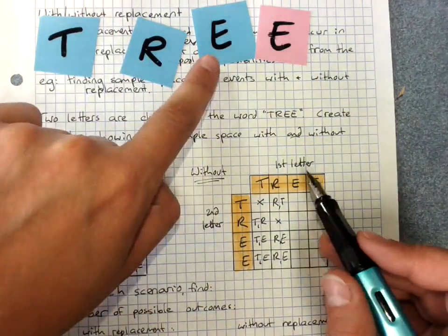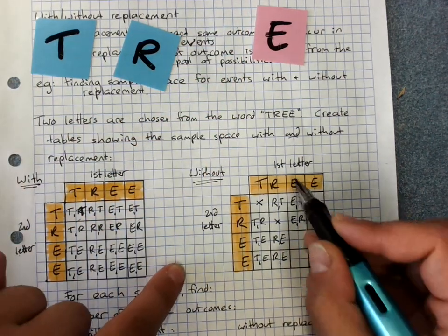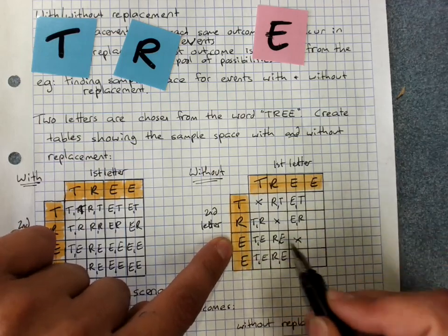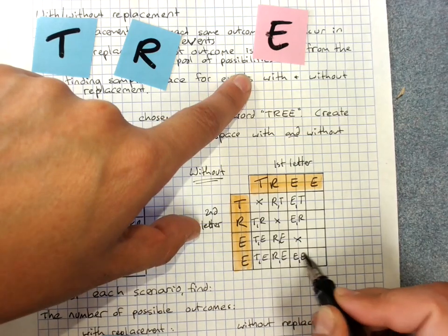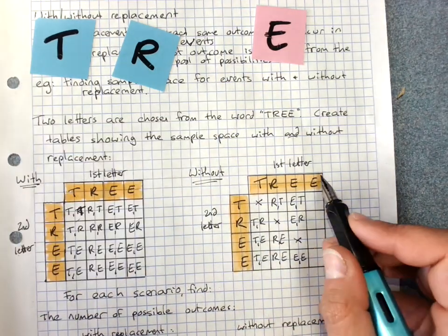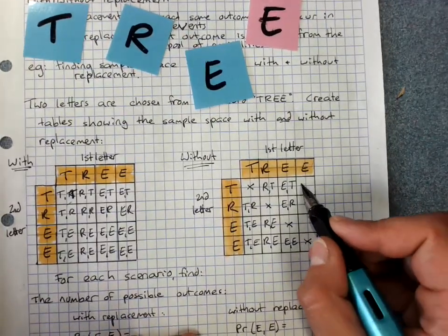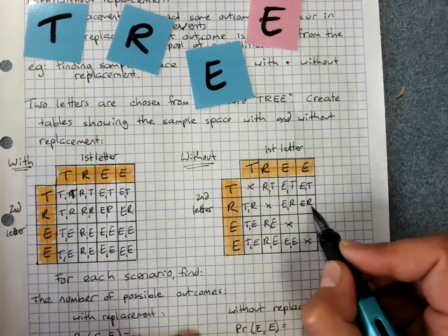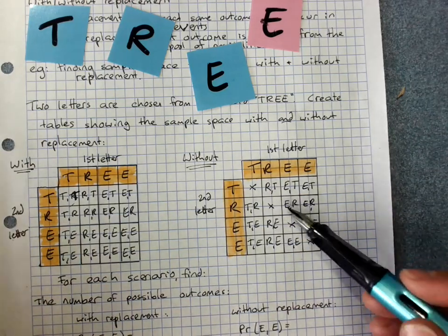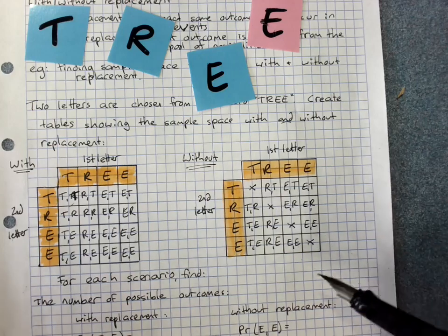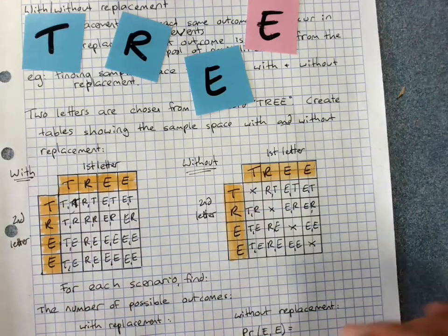If I got the blue E first I could get E, T, E, R. I couldn't get that E, E, but I could get blue E and then pink E. And of course if I got the pink E first I wouldn't be able to get pink E, pink E, but I could get E, T, E, R, or E, E that way. And notice that these are not outcomes, they're not part of the sample space at all because they can't happen. So there's fewer possible outcomes without replacement than with.